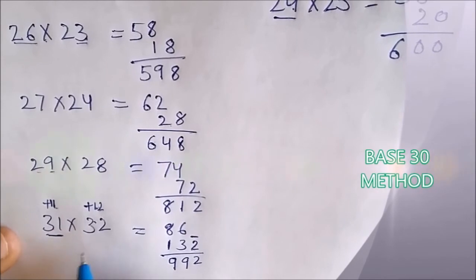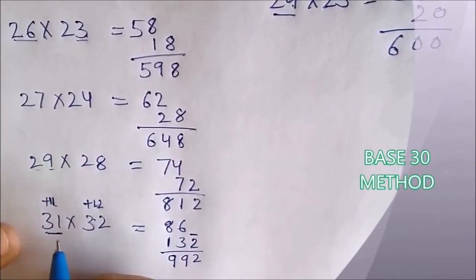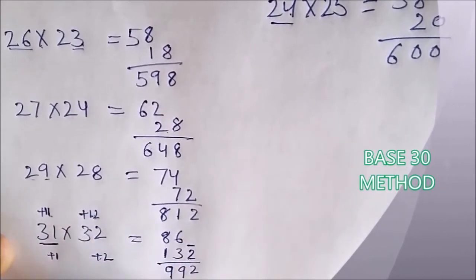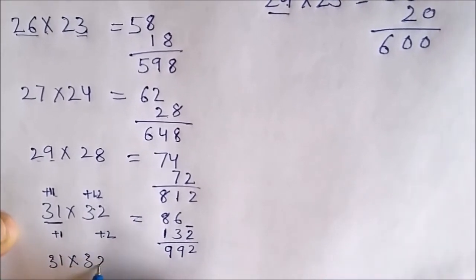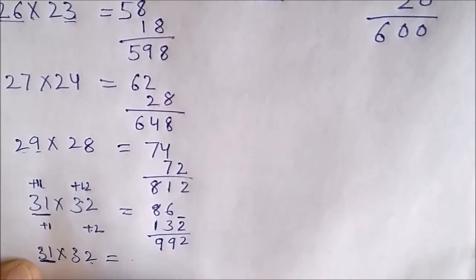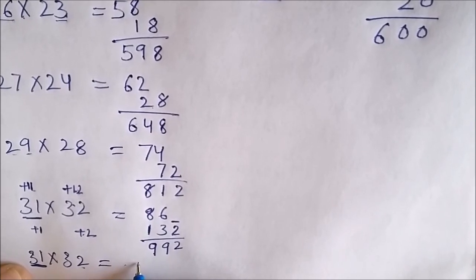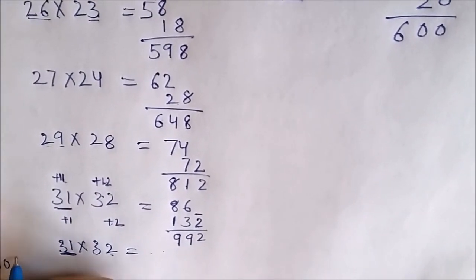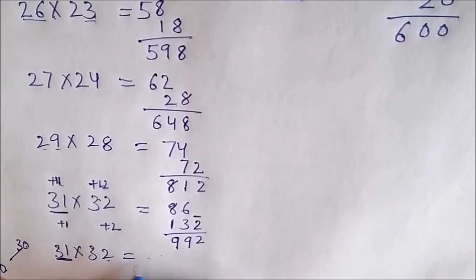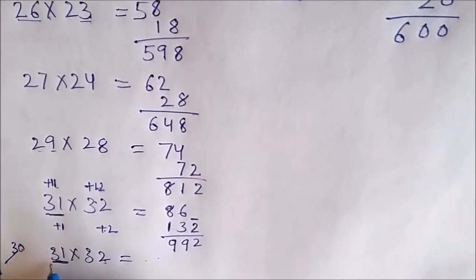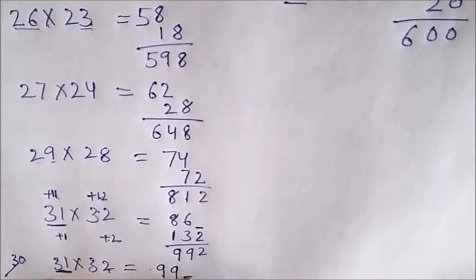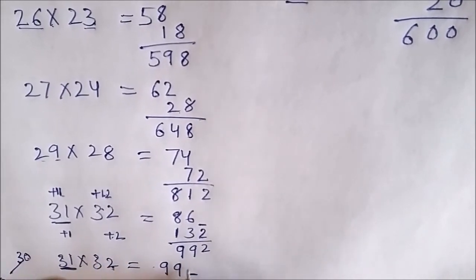Using base 30 method, you can do this even more quicker. Let me tell you that. This number is one digit away from 30 and this is two digits away from 30. So, using base 30 method, 31 into 32 is, I will be adding this 2 to this 31. This is 33 and before writing here, I will multiply it with 3 because the primary base is 10 and secondary base is 30 here and the secondary base is 3 times the primary base. So, I will multiply the sum of these two by 3. 31 plus 2 is 33 and multiplying it with 3, I will get 99 and for this digit, this is product of 2 and 1. It is 2.